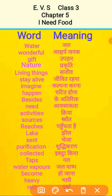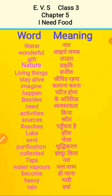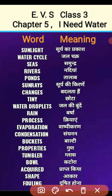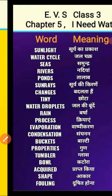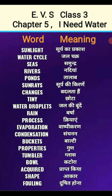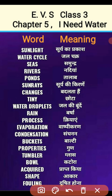Ek page aur hai — word meaning. Is page ka aap screenshot le lijiye aur uske baad copy pe likh lijiyega. Aate hain next page pe. Isme jo words likhe gaye hain, capital mein likhe gaye hain, aur first page pe jo words likhe gaye the, wo small letter mein likhe gaye the. Toh aap dono ko capital letter mein likh sakte hain ya small mein, koi problem nahi hai. Ek hi jaise likhenge, do alag alag tarike se nahi likhenge. Ya first word capital, baaki saara small.